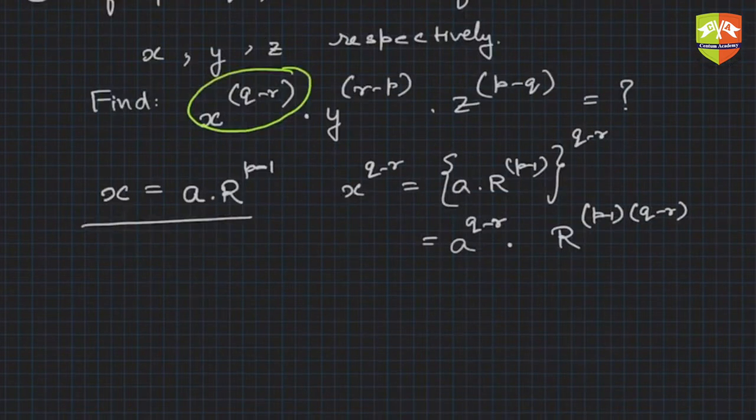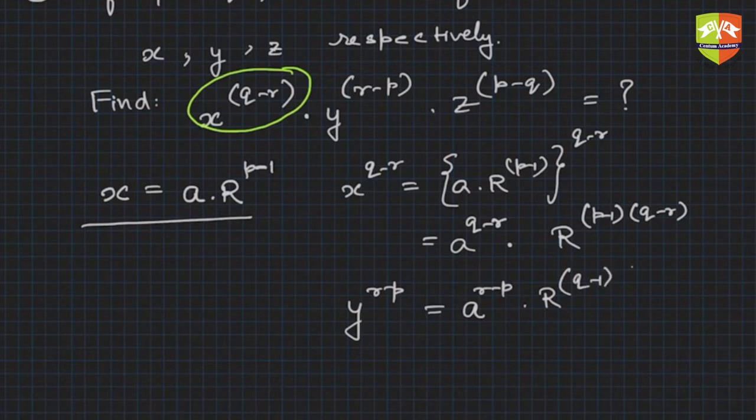This is for x to the power (q minus r). Similarly y to power (r minus p) will be a to the power (r minus p) times R to the power, what was this? q-th term so (q minus 1)(r minus p). And then similarly z...